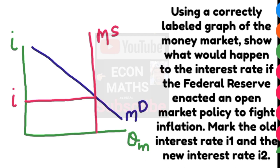Now the open market operation to fight inflation is to sell bonds. The selling of bonds reduces the reserves in the banking system and shrinks the money supply.